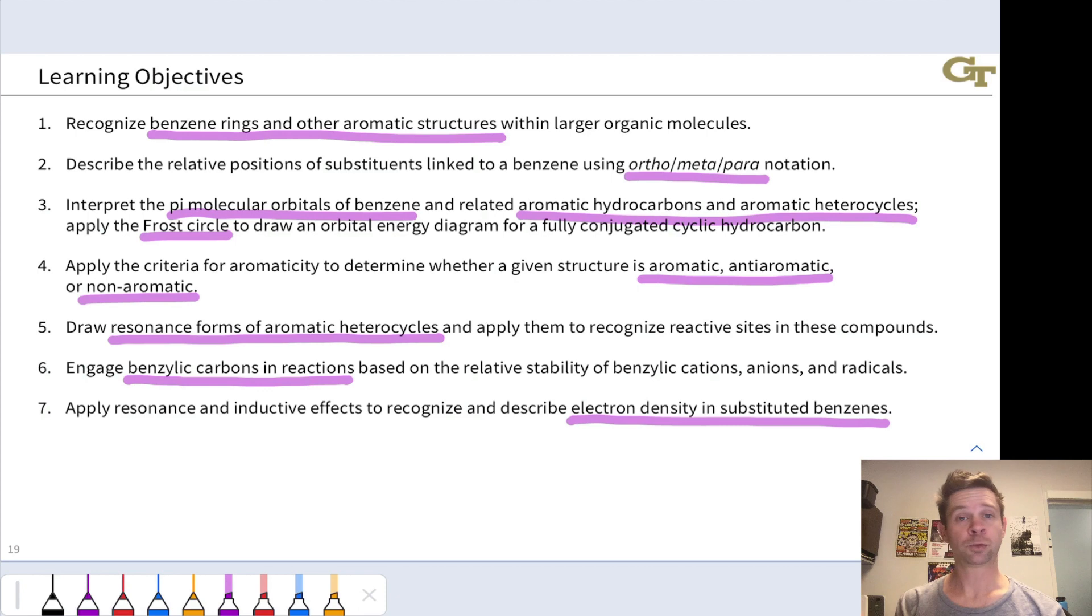So first and foremost, we'll start with benzene, which is the prototypical aromatic compound, and learn how to recognize benzene rings in larger structures, as well as other related aromatic and heteroaromatic structures. Although we will talk very little about nomenclature in this course, we will introduce these terms ortho, meta, and para related to substituents linked to a benzene ring. This will help us visualize and draw substituents in various possible orientations around a benzene ring.